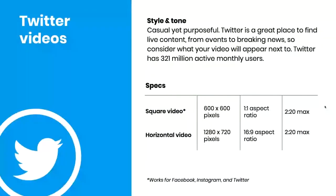Let's talk about Twitter. Twitter is casual but purposeful — short content. Twitter doesn't have as large an active user base as Facebook or Instagram, with only 321 million active monthly users, but it has passionate fans you can reach with video content. It's a good place for live content from events to breaking news, and a lot of people in the communication industry frequent the platform. Tech specs: 600x600 for square video. Horizontal video should be 1280x720 with a 16:9 aspect ratio and a 2-minute 20-second max. MP4 and MOV are accepted, and the max file size is 4 gigabytes.